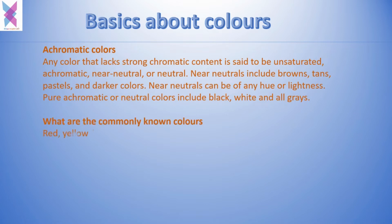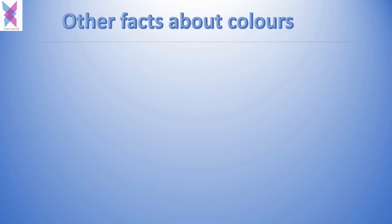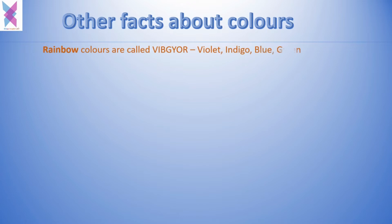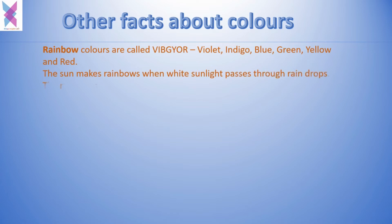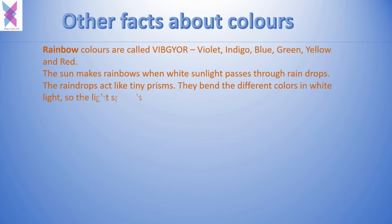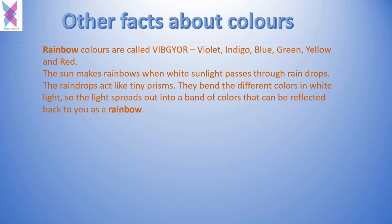The commonly known colors are red, yellow, blue, brown, orange, green, violet, black, pink, indigo, white, and gray. Most of us know the rainbow colors — there are seven of them: violet, indigo, blue, green, yellow, orange, and red, shortly called VIBGYOR. When the sun makes rainbows, sunlight passes through raindrops. The raindrops act like tiny prisms — they bend different colors in white light so the light spreads out into a band of colors that we see as a rainbow.